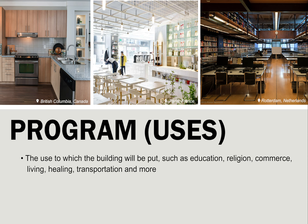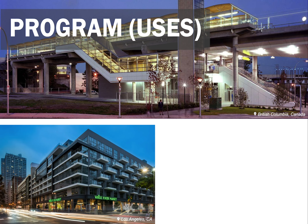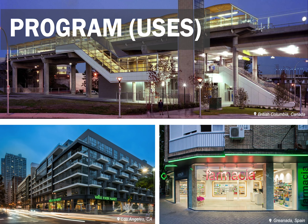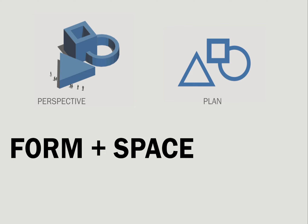The program of a building refers to the use or uses to which it will be put. Uses or program elements can include education, worship, stores, jobs, services, or housing. The use of the building may affect how the building looks. The top picture is a railway station that couldn't be used for any other purpose. The lower left picture is of a mixed-use building that can include a variety of commercial or retail space on the ground floor and living spaces on the upper floors. The lower right picture shows a pharmacy opening onto the street with space for living above.